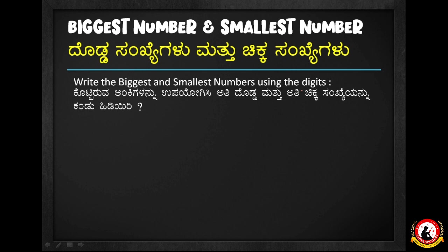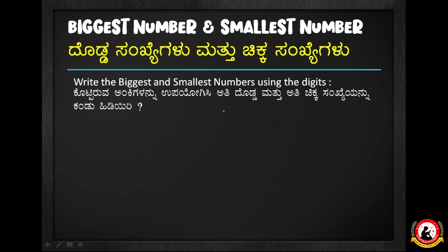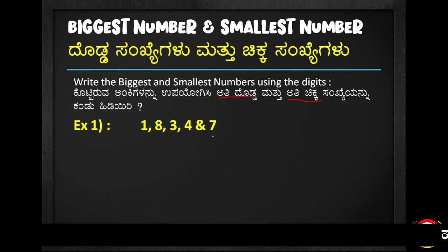What is it? We are given the digits: 1, 8, 3, 4, 7. Let us arrange these digits to form the biggest and smallest numbers.